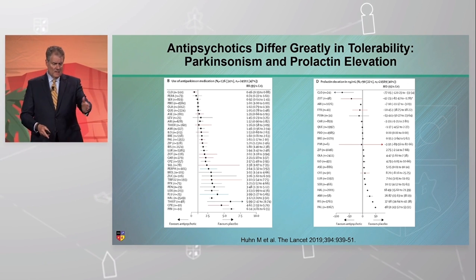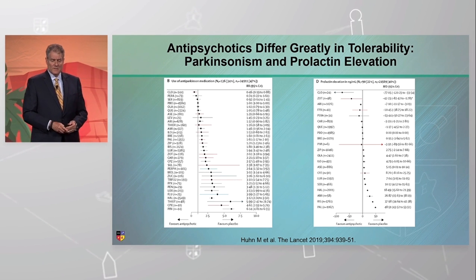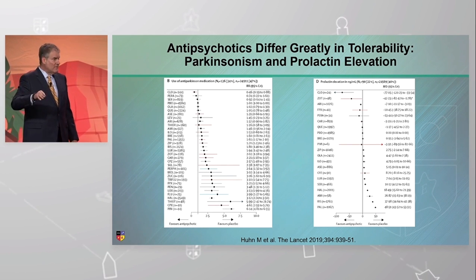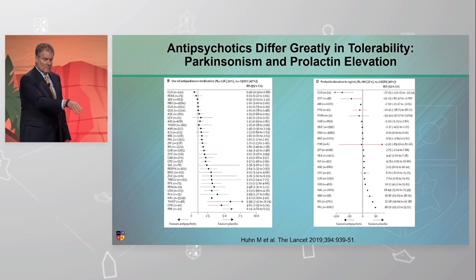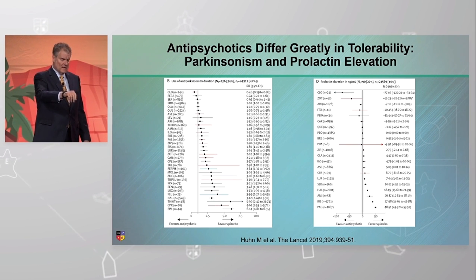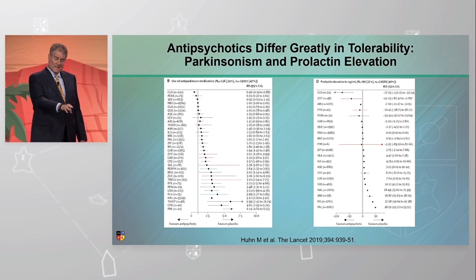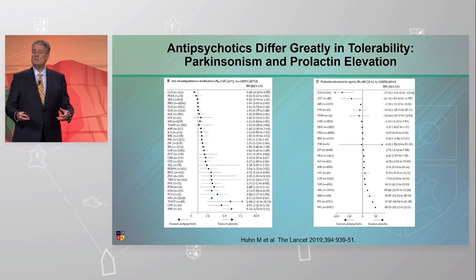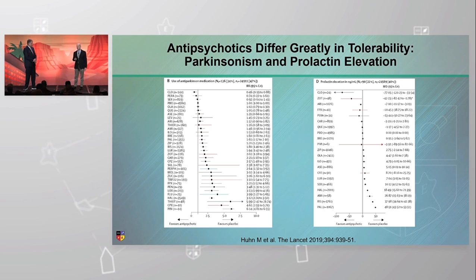For drug-induced Parkinsonism on the left, you can see there is quite a gradient. On the right, for prolactin elevation, there's significant variability — interestingly, risperidone and paliperidone, which is the active metabolite of risperidone, both have very high prolactin elevation, surprisingly higher than haloperidol. The ones with highest risk are dominated by first-generation antipsychotics. That's the raison d'etre for atypicals — they were atypical in having lower risk of drug-induced movement disorders. These forest plots tell us there's tremendous variability in adverse events and tolerability, but not so much with efficacy.